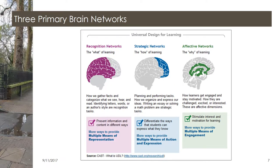UDL takes into consideration the three primary brain networks: recognition networks, strategic networks, and affective networks. Recognition networks encompass the what of learning — how we gather facts and categorize what we see, hear, and read. Identifying letters, words, or an author's style are recognition tasks. To address recognition tasks, we present information and content in different ways. This equates to providing multiple means of representation.